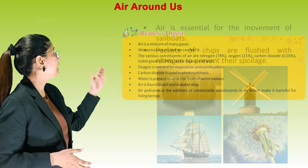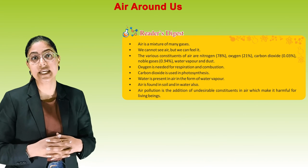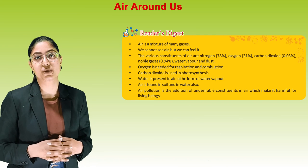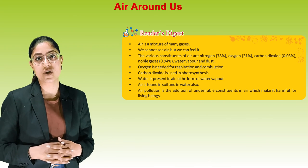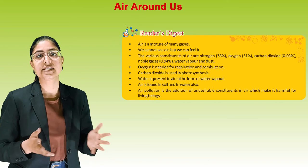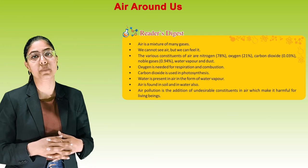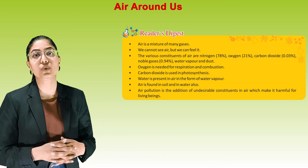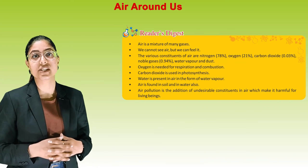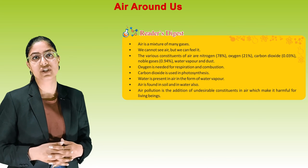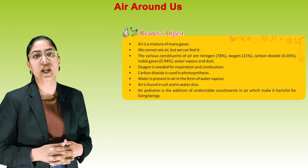Quick revision: air is a mixture of many gases. We cannot see air but we can feel it. The various constituents of air are nitrogen 78%, oxygen 21%, carbon dioxide 0.03%, noble gases 0.94%, water vapor, and dust. Oxygen is needed for respiration and combustion. Carbon dioxide is used in photosynthesis. Water is present in air in the form of water vapor. Air is found in soil and in water also. Air pollution is the addition of undesirable constituents in air which make it harmful for living beings.